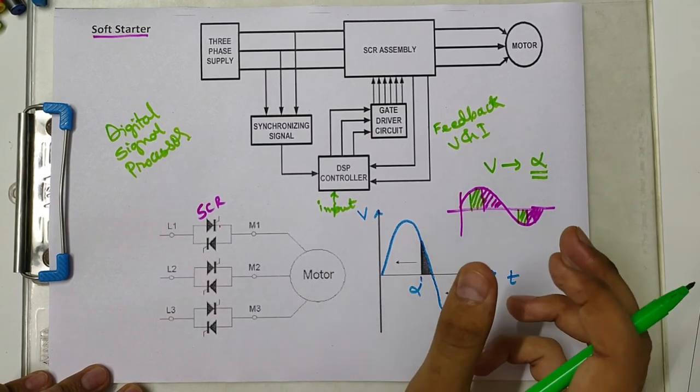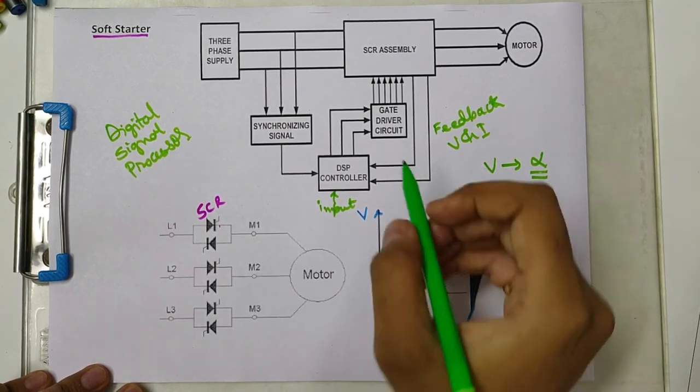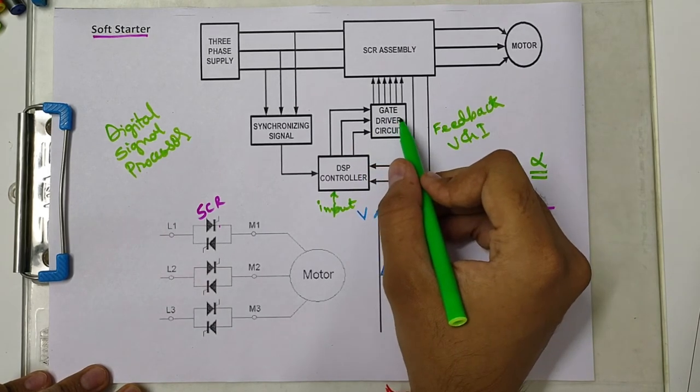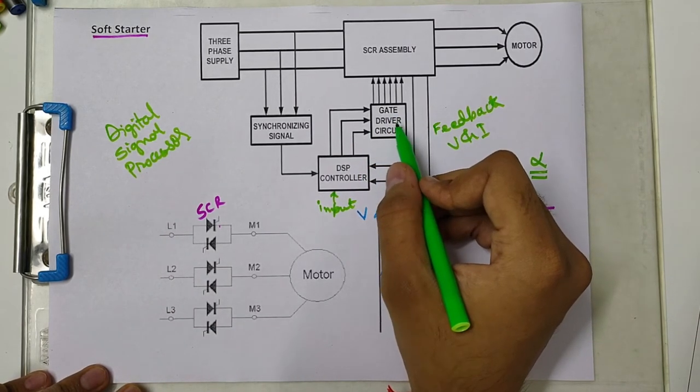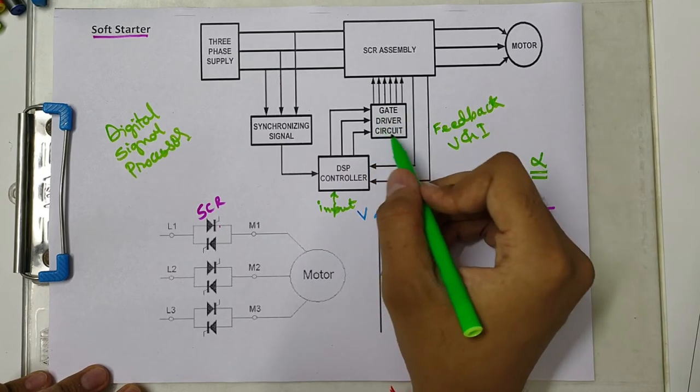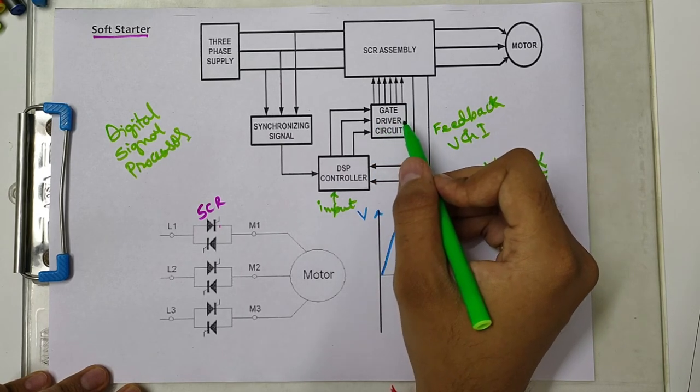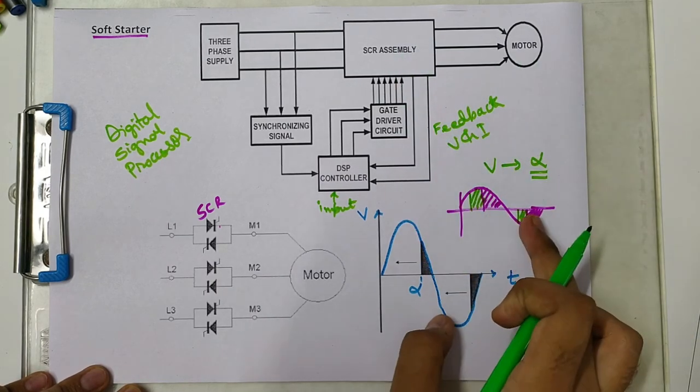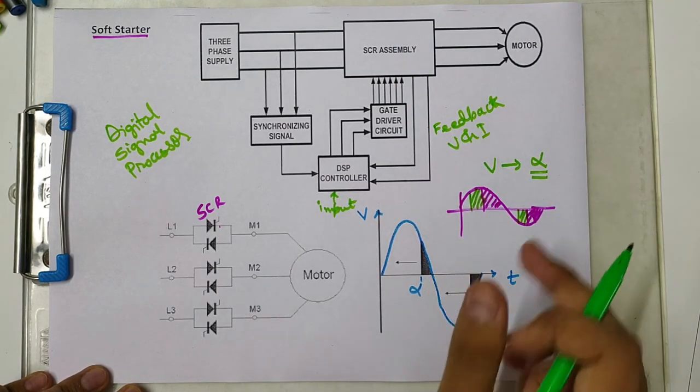In some cases, it also takes input commands from the operator through a Human Machine Interface (HMI), where we can input desired speed or voltage values. It then gives commands to the gate driver circuit through electronic circuits like transistors and optocouplers, which turn the SCRs on and off to produce the desired voltage waveforms.